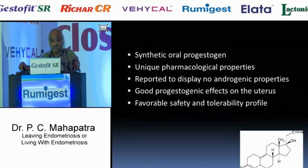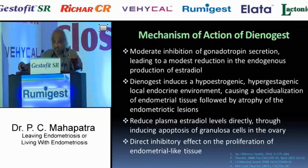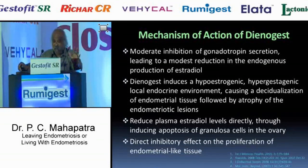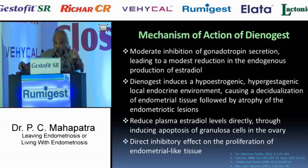The mechanism of Dienogest is a moderate inhibition of gonadotrophin secretion, leading to a modest reduction in the endogenous production of estradiol. Dienogest induces a hypoestrogenic, hyperprogestogenic local endocrine environment, causing decidualization of endometrial tissue followed by atrophy of the endometriotic lesions.